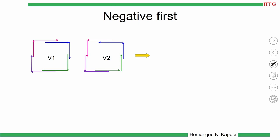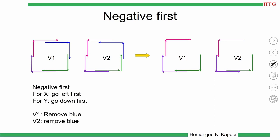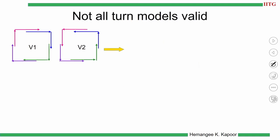The third example is negative-first, meaning you should go in the negative direction — south and west — first. In V1 the blue turn is restricted, and in V2 the blue turn is also restricted. Negative-first applies to both dimensions: go in the negative x direction and negative y direction first.